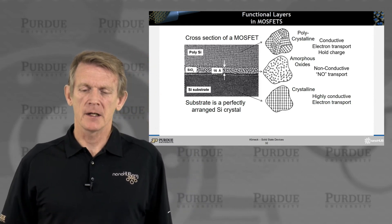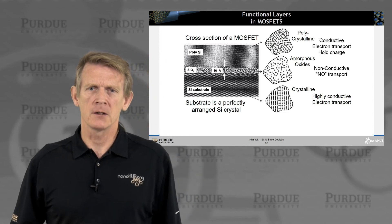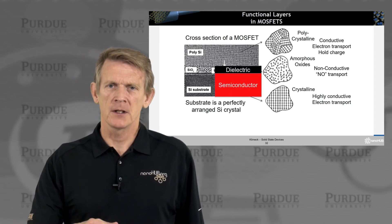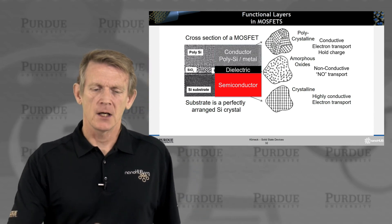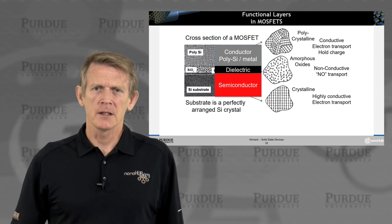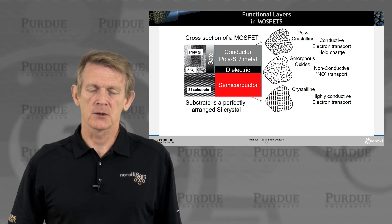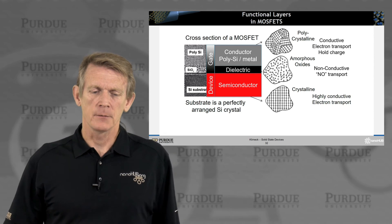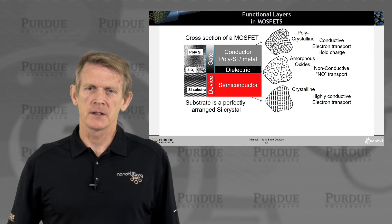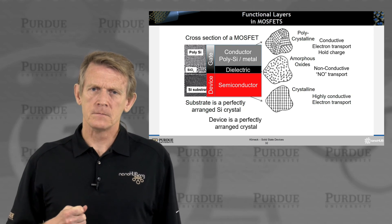You're separated by a material that is not conductive — supposedly there's no transport, though we'll learn how some transport can still happen. All of that puts it together: on the bottom you have a semiconductor, then you have a dielectric, and on top you have a conductor of polysilicon and a metal. That is really a stack of a typical MOSFET in real devices. We call the top the gate and the bottom the device — those are nomenclature terms we'll use throughout the course.